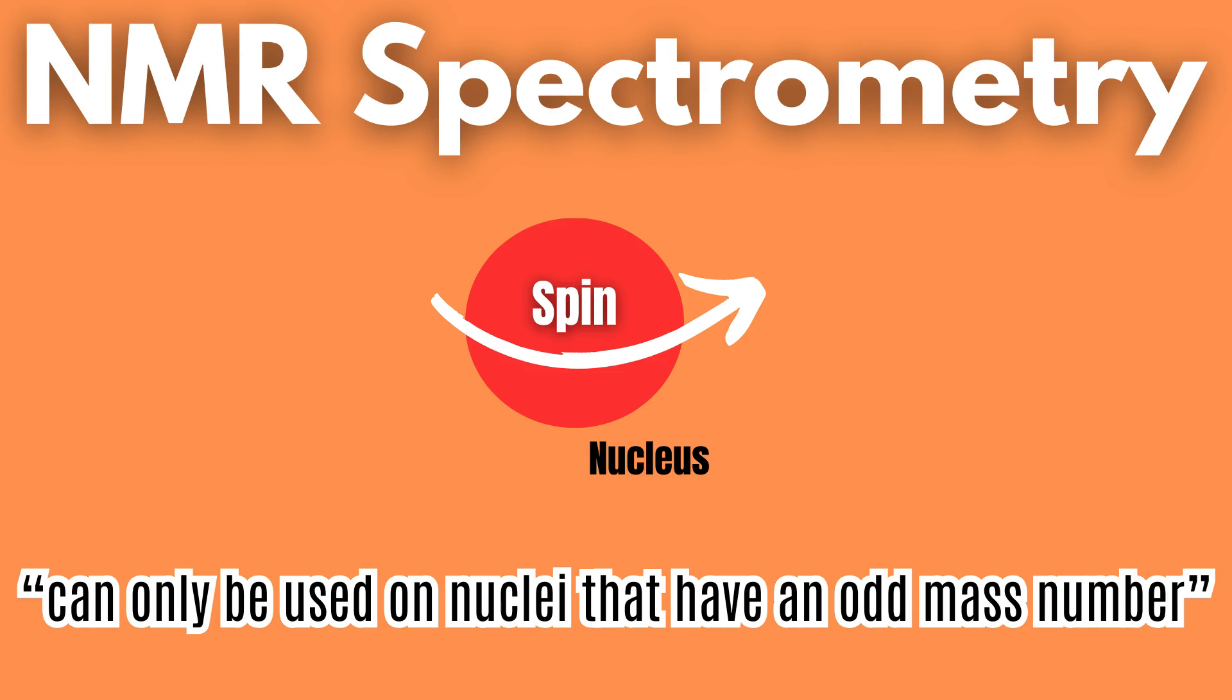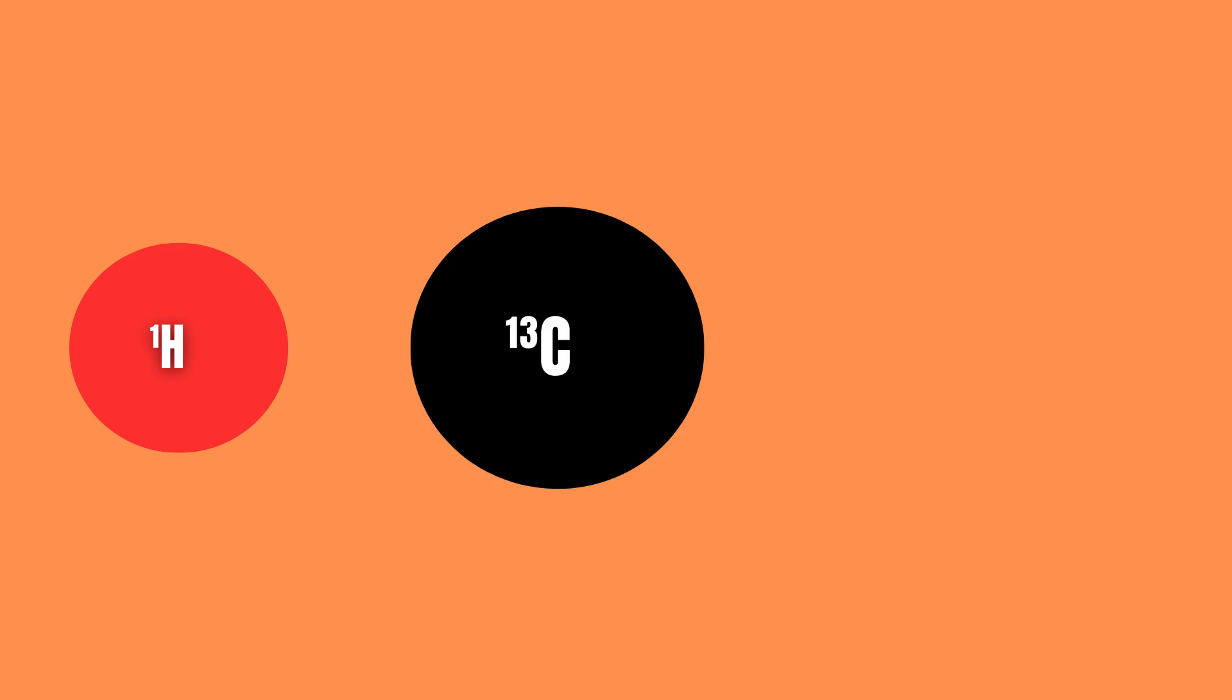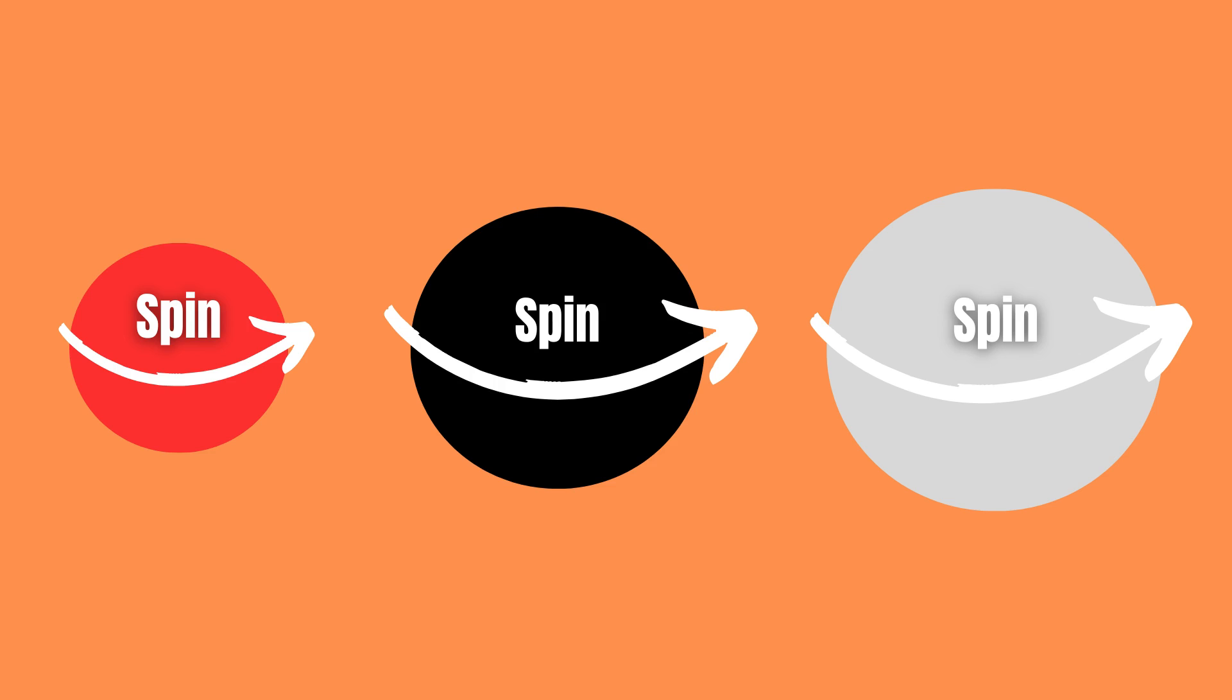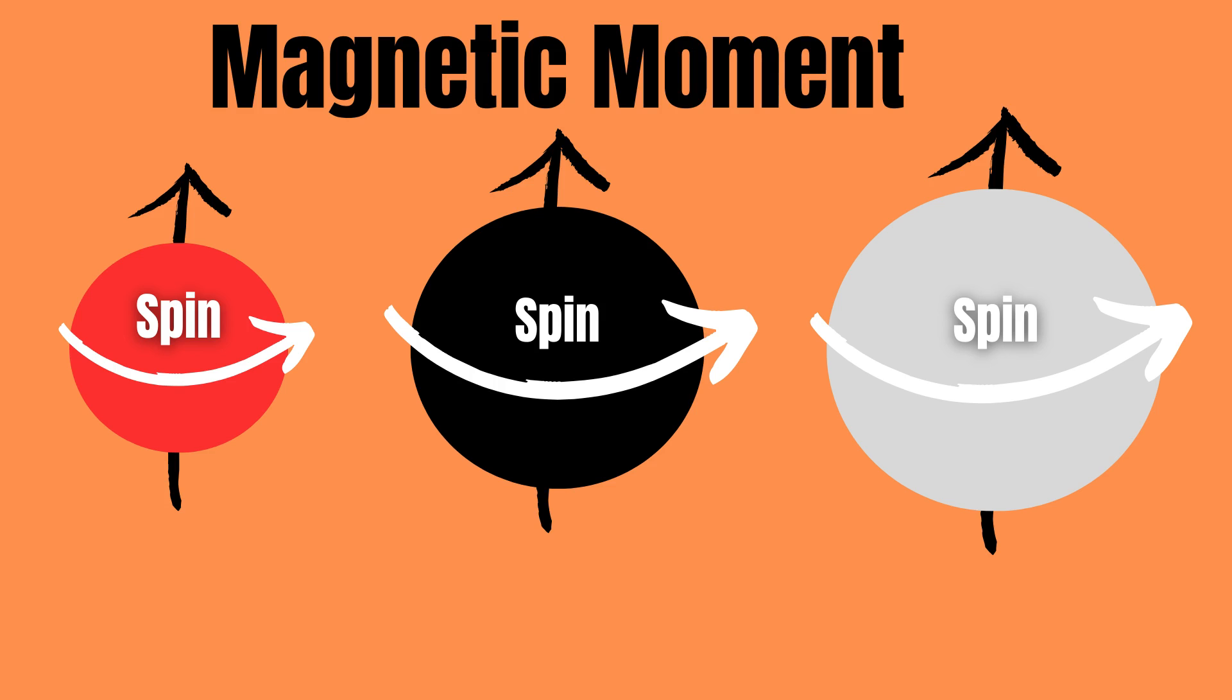NMR can only be used on nuclei that have an odd mass number, such as hydrogen-1, carbon-13, and fluorine-19, since these nuclei have the property known as spin. Due to their spin, they create a small magnetic field with a magnetic moment.